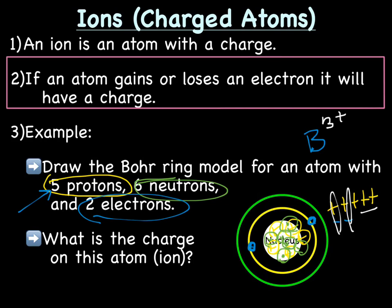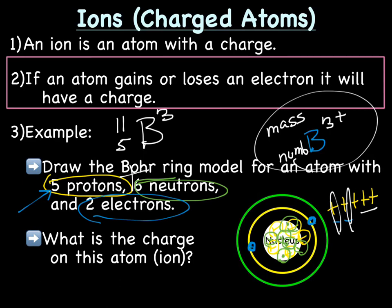If we wanted to write the nuclear symbol, which you may have to do for your assignment, if you remember, at the top you write the mass, atomic mass, and at the bottom it's the atomic number. We could write this as mass is protons plus neutrons, so 5 plus 6 is 11. He would be boron 11, and then the bottom number is the atomic number, which is the same as the number of protons, so 5 with a charge of 3 plus.